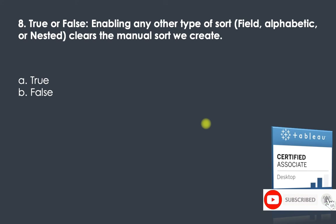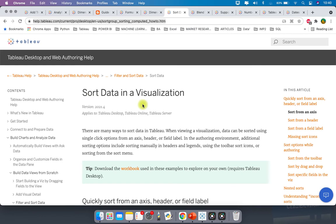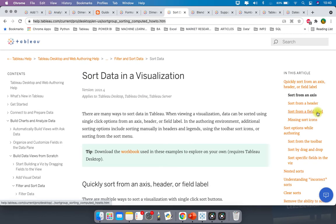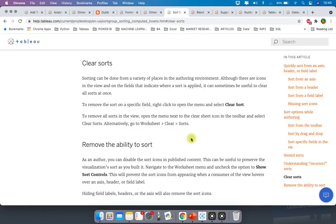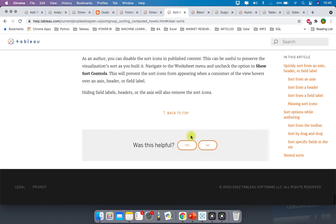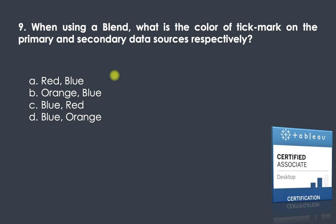Question eight: true or false — enabling any other type of sort, whether field, alphabetic, or nested, clears the manual sort you created. The answer is true. You can read more on sorting in Tableau Help, which covers all types: sort from an axis, sort from a header, sort from a field label, nested sorts, and clearing sorts. Experiment by manually sorting a dimension and then applying another sort — it will clear the manual sort.